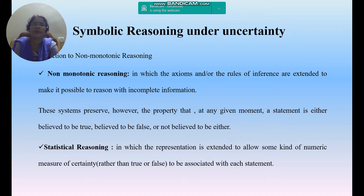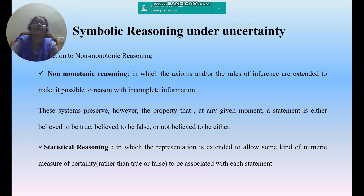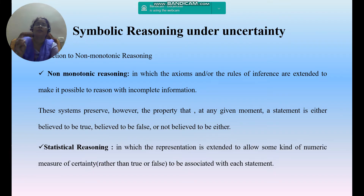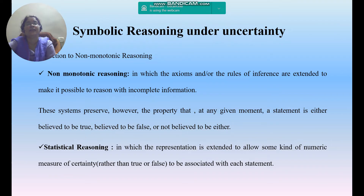Non-monotonic reasoning systems preserve the property that statements can be believed true, believed false, or believed either. Whenever we infer such rules based on incomplete and inadequate information, those rules are not completely true or completely false — they can be either true or false in non-monotonic reasoning.